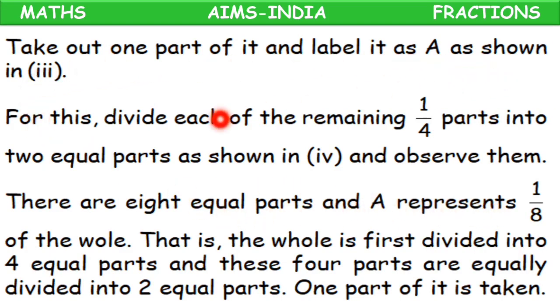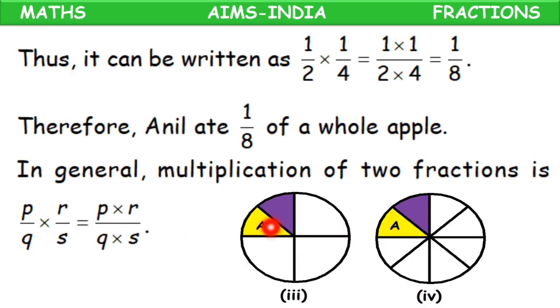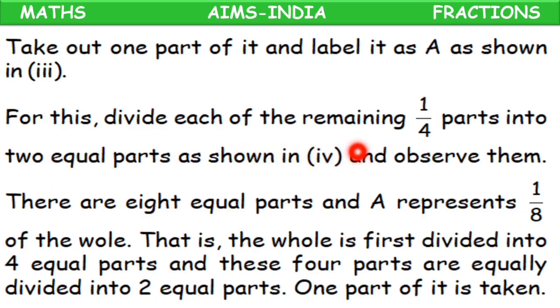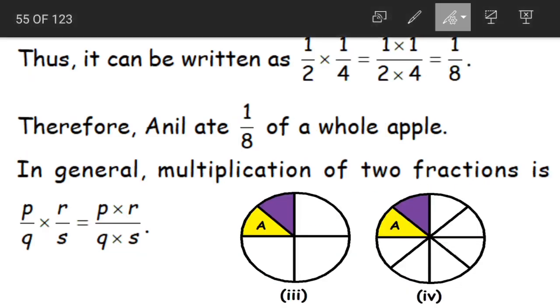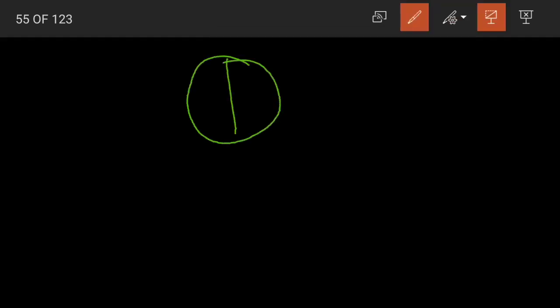Take out 1 part of it and label it as shown. This is the part that he ate. Now, divide each of the remaining 1/4 parts into 2 equal parts as shown in figure 4 and observe them. The circle was divided into 4 parts, and from this 1/4, Anil again divided it into 2 parts. He ate only 1/2 — just this much. So in the same way, let us divide the remaining parts also into 2.